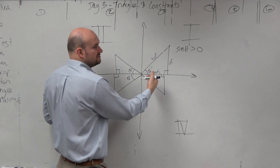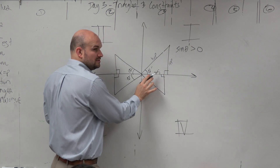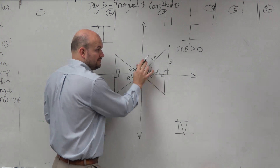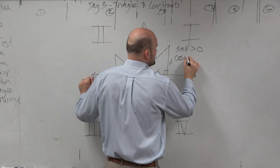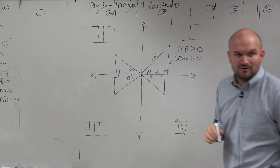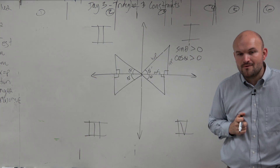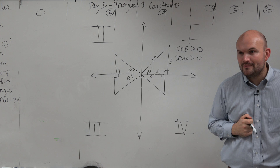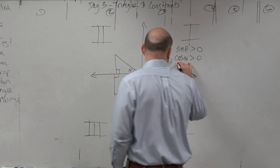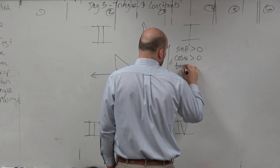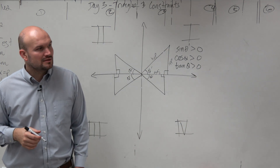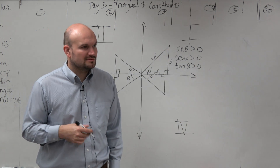What about cosine? Cosine is going to be adjacent, which is positive, over hypotenuse, so cosine of theta is greater than zero. And tangent is also positive, right? So the first quadrant is kind of boring — everything's positive.